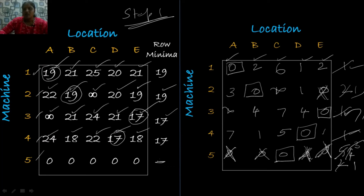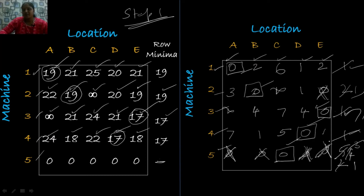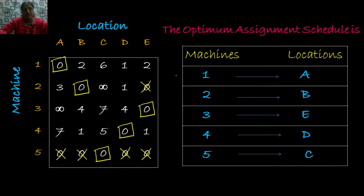After making all assignments, we check that each row has exactly one assignment. The optimum assignment schedule is: machine 1 is installed at location A, machine 2 at location B, machine 3 at location E, machine 4 at location D, and the dummy machine 5 is assigned to location C.